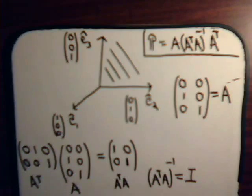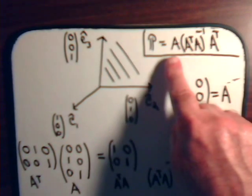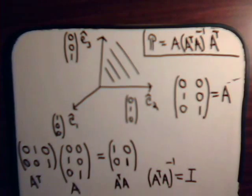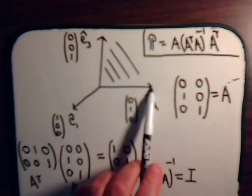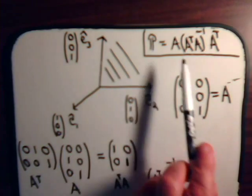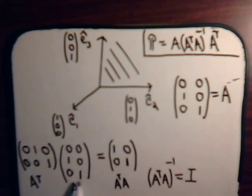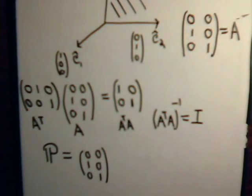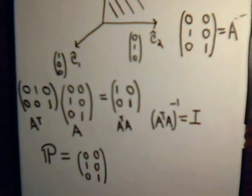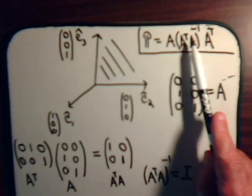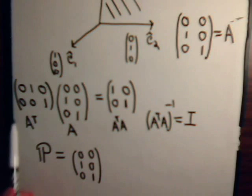So the projection matrix P is equal to matrix A times the identity matrix — which is just the identity matrix — times A transpose. So here we have a really simple situation: the projection matrix P that projects into the E2, E3 plane is just going to be A times A transpose. We have matrix A, and all we have to do is multiply it by A transpose, because the middle term is just the identity matrix. And A transpose is this.